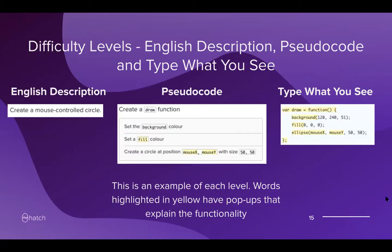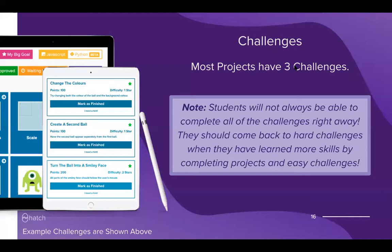English description is just a sentence, pseudocode identifies the keywords used in code blocks, and type what you see is literally what students are expected to type. Most projects have three challenges. An important thing for parents to know is that students won't always be able to complete all challenges right away — they should come back to harder challenges after learning more skills. Every student has a coach, and you can always ask for project recommendations or help with specific challenges.